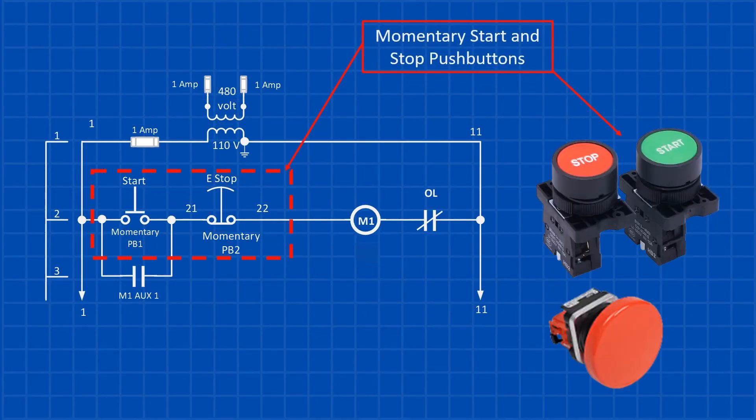The next set of components includes the momentary start and stop buttons. Notice the term momentary. This means the buttons are only active while being pressed. Once you release them, they return to their normal state. The stop button is normally closed, meaning it allows current to flow until pressed. The start button, on the other hand, is normally open and only completes the circuit when you press it.